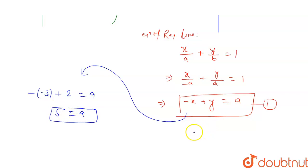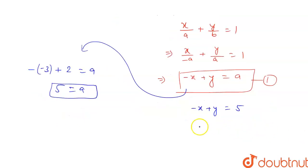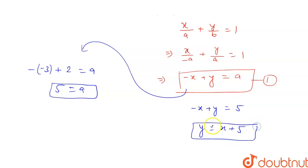Putting the value of a into the equation, we get minus x plus y equals 5, or equivalently y equals x plus 5. This is our required equation. Thank you.